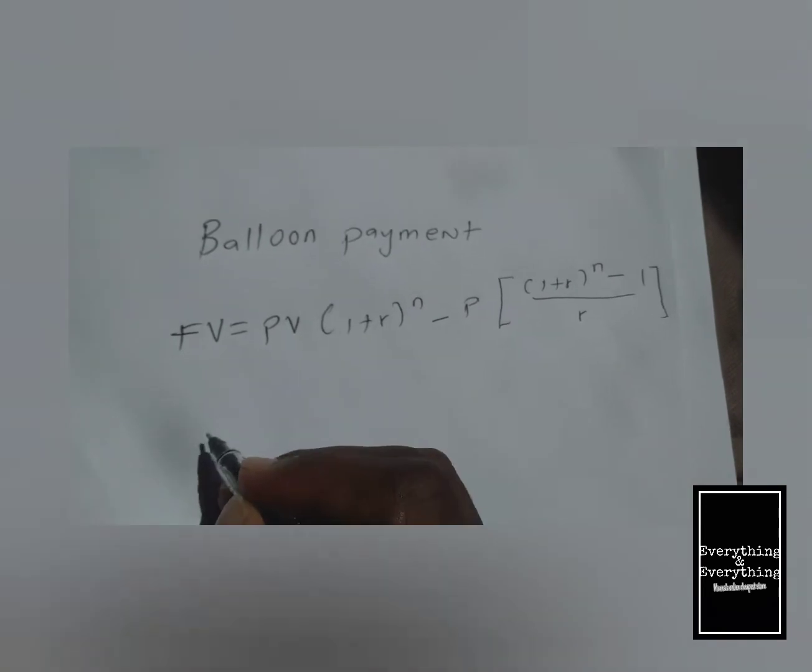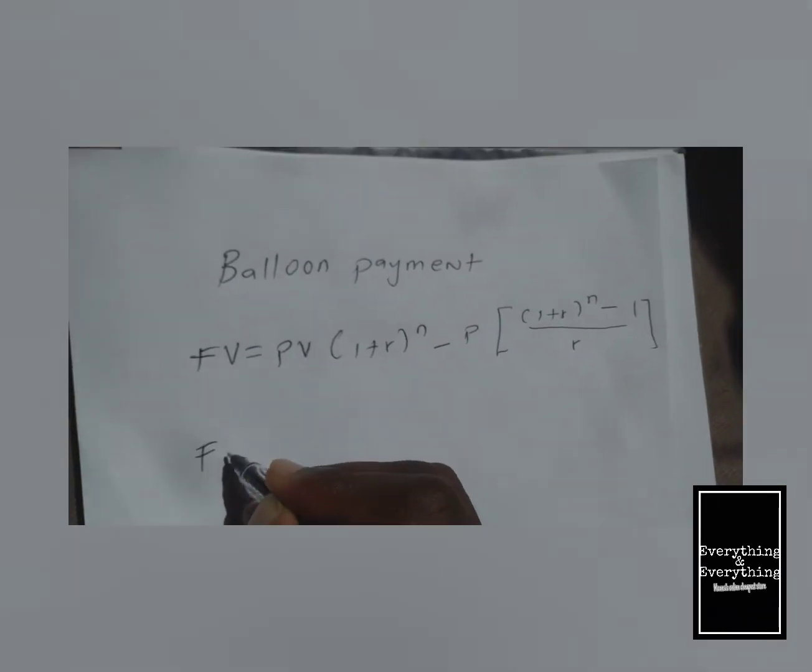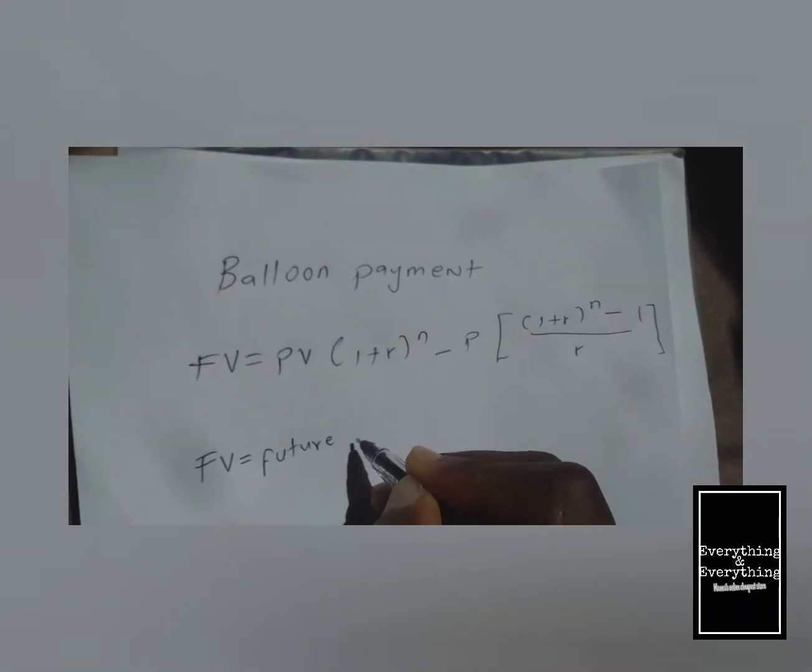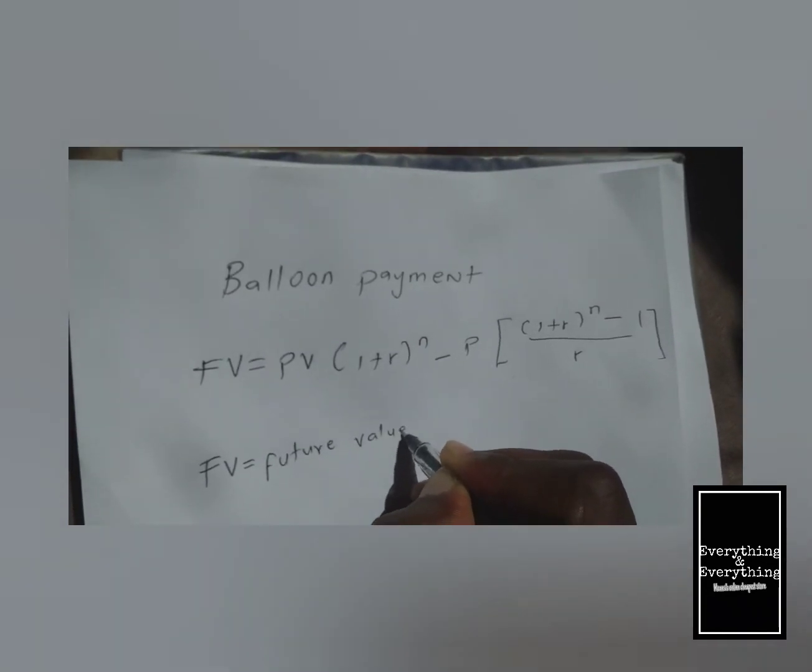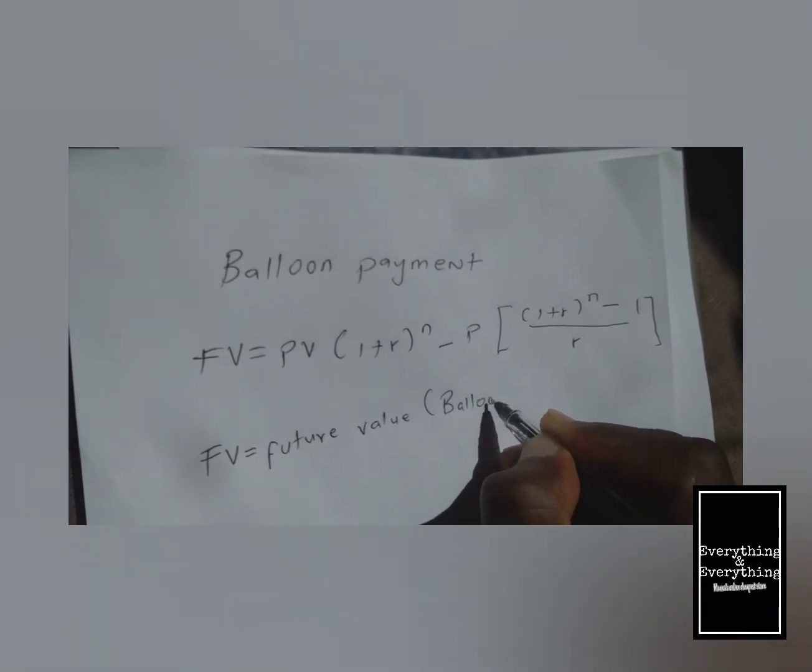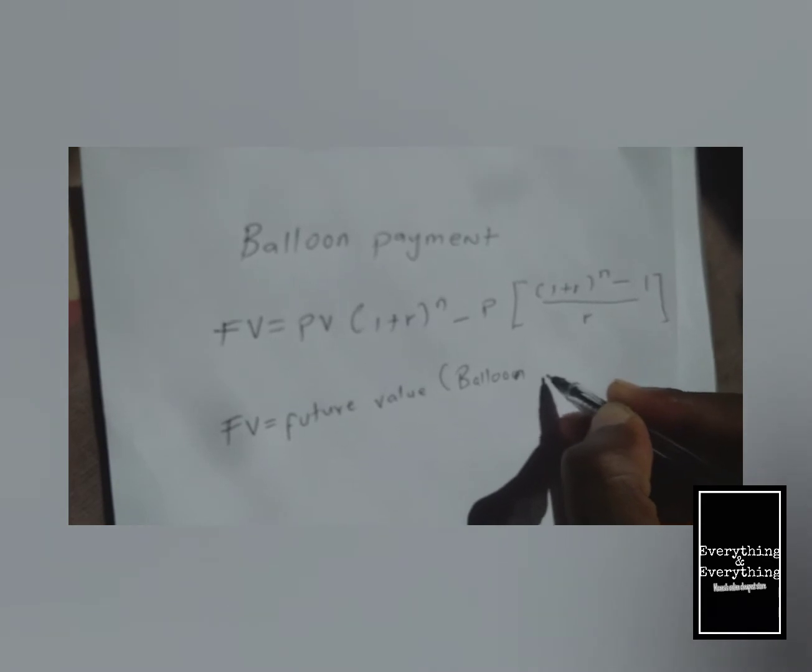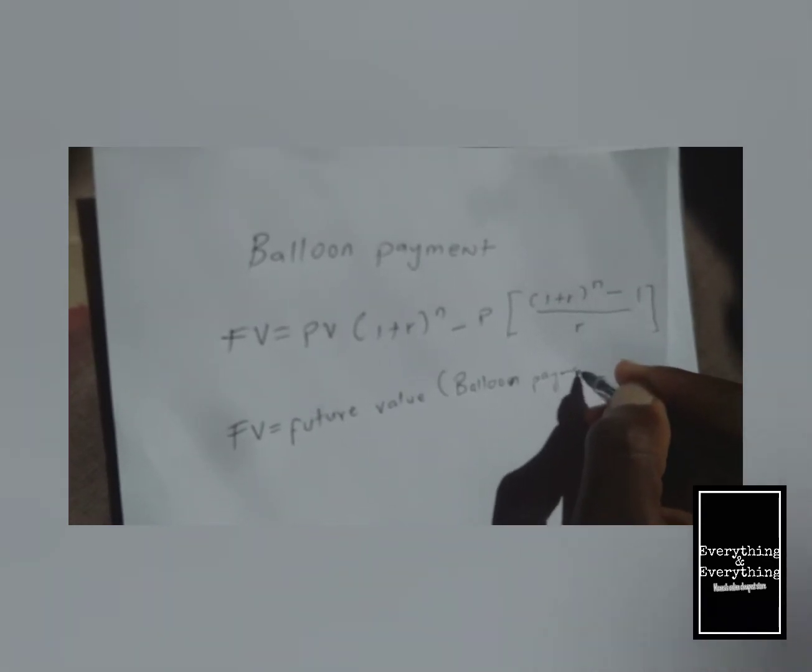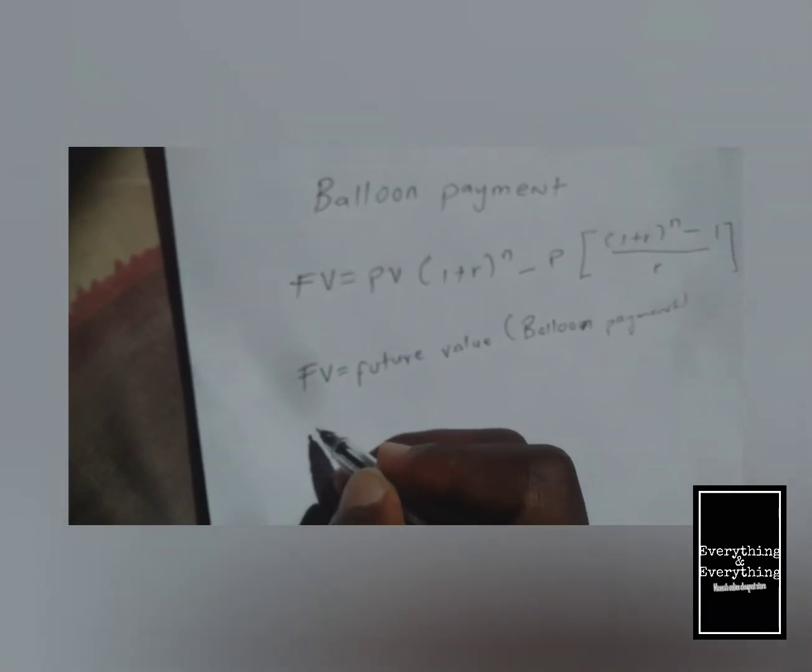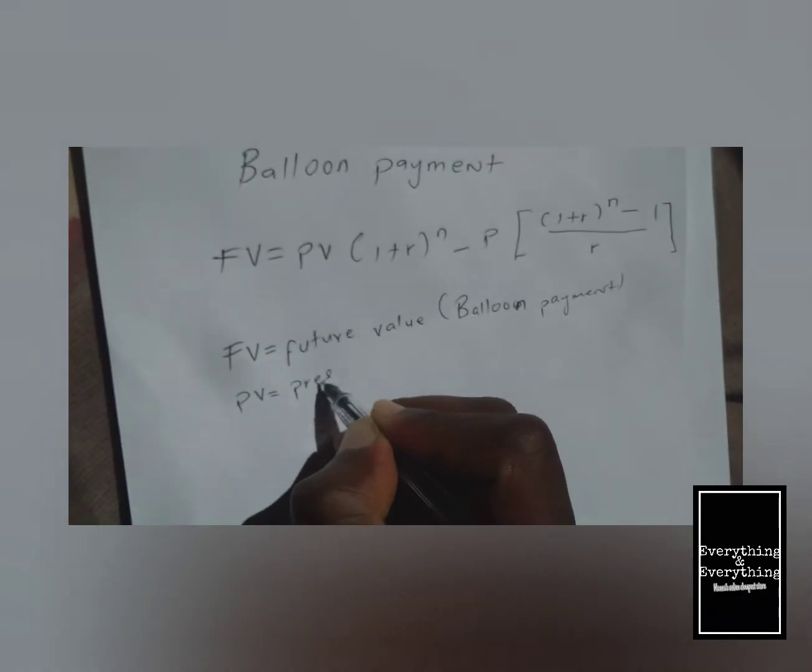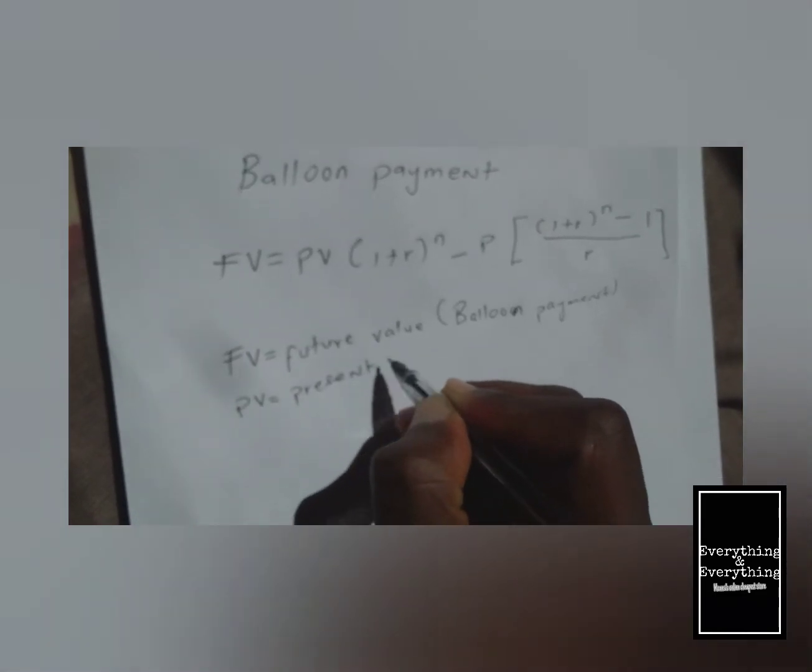Our FV is the future value. This is our future value being the balloon payment. And our PV, this is our present value.